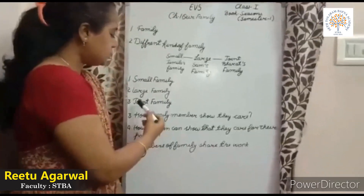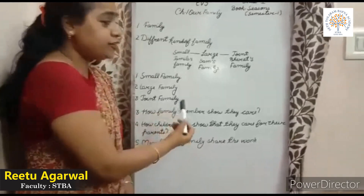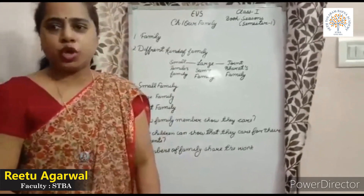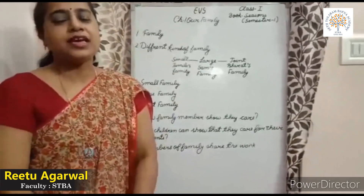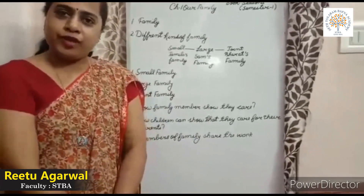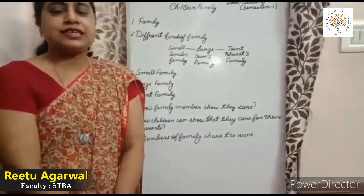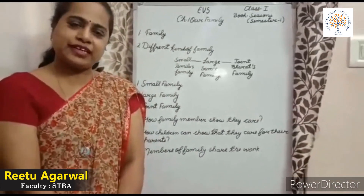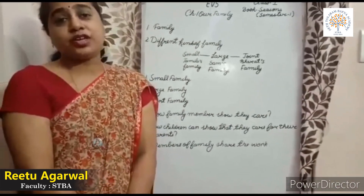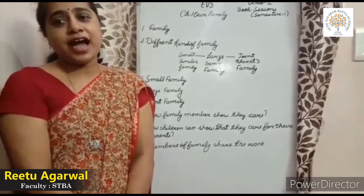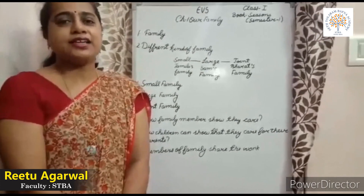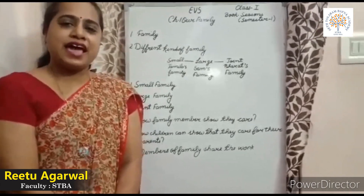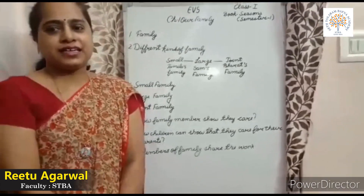The third one is joint family. Do you know the joint family? Joint family is made up of grandparents, children, uncle and aunt, and cousin.